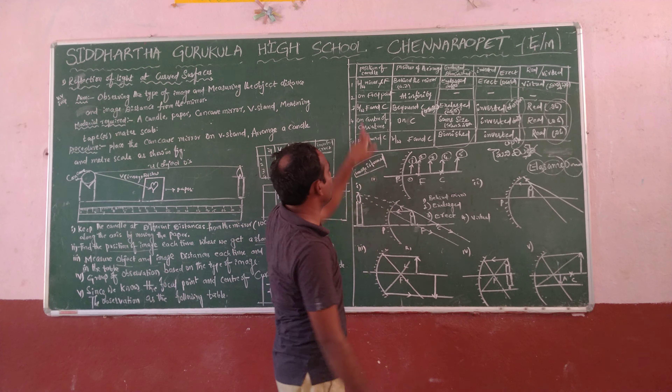So it is the first diagram. The characteristics of this diagram: first one is behind the mirror — behind the mirror means a virtual image pattern. Second one is enlarged image. Third one is erect — erect means upright. Fourth one is virtual image.